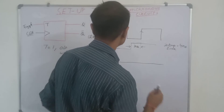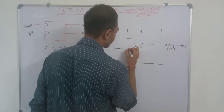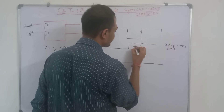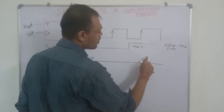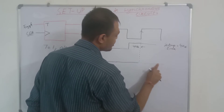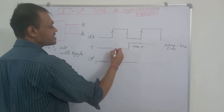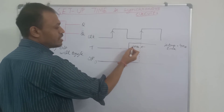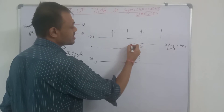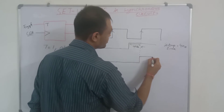If the T input was available to us 4 nanoseconds before — let us say it was available 4 nanoseconds before — then the output will toggle when the positive edge is applied. This T input got stable 4 nanoseconds before this positive edge came; this time duration is 4 nanoseconds. So now the output will toggle to 1.